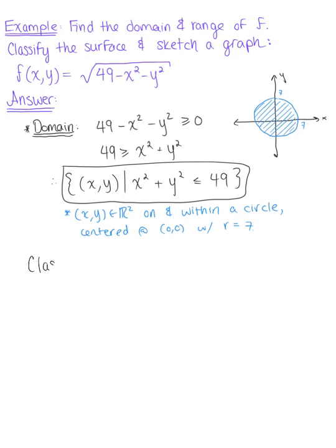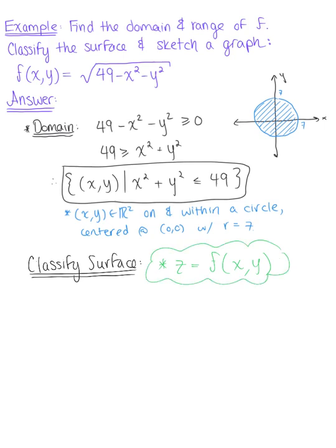So let's now classify this surface. We want to keep in mind here that for a function f(x,y) in R³, you can say that this is also defined as z equals f(x,y). And so we can rewrite our given surface here as z equals the square root of 49 minus x² minus y².